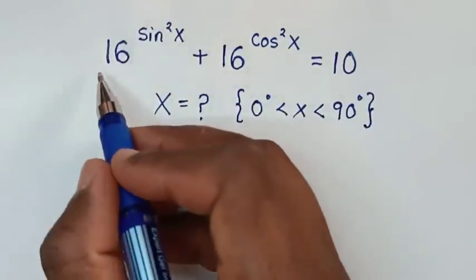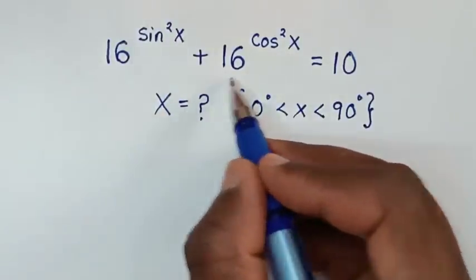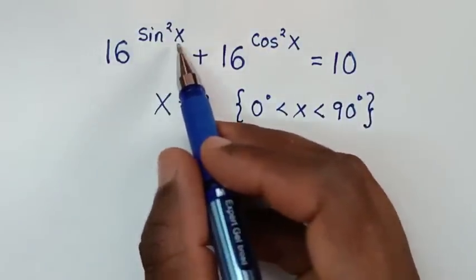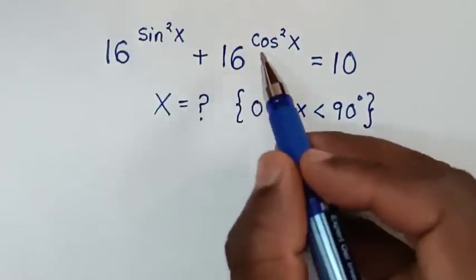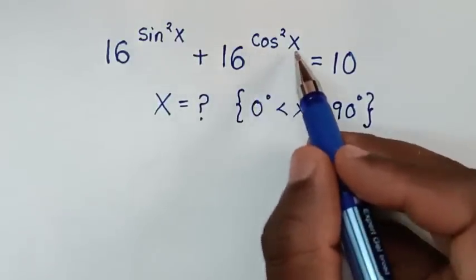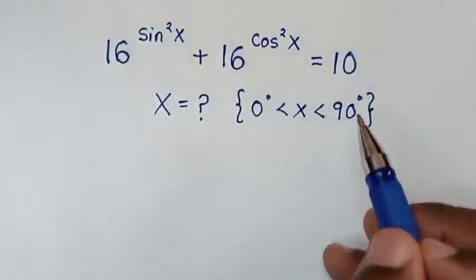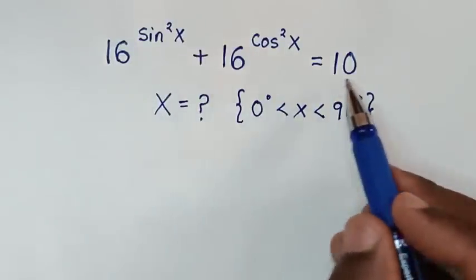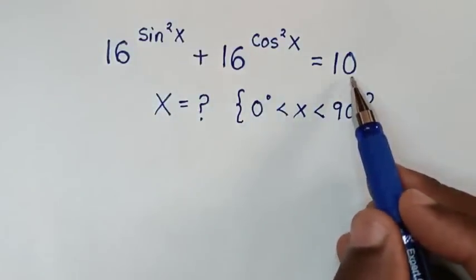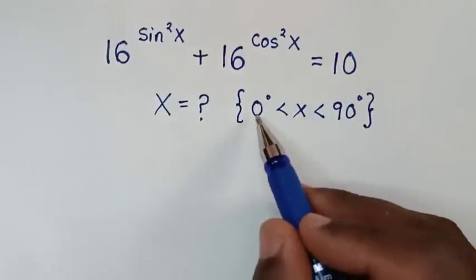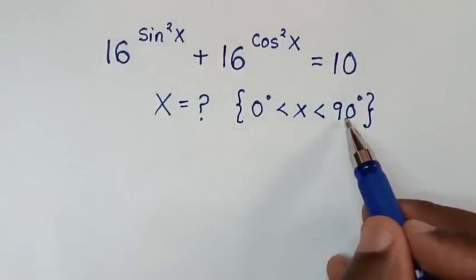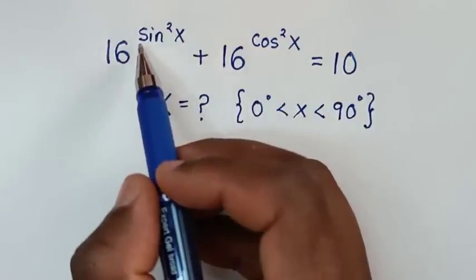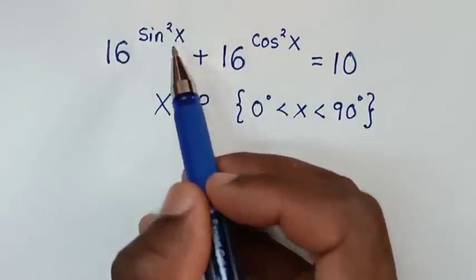Hello, you are welcome to solve this math problem which is 16 power of sin squared x plus 16 power of cos squared x is equal to 10, to find the values of x from this trigonometric equation such that x is between 0 degrees to 90 degrees.